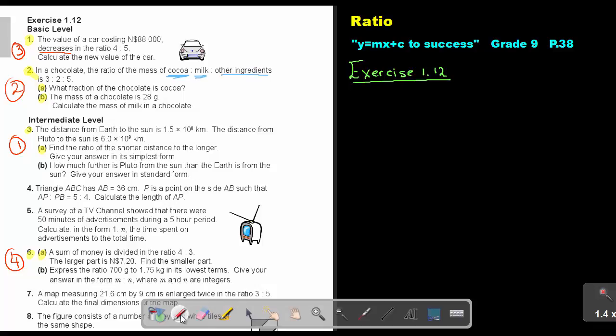Let's look at number 3. Now, the distance from Earth to the Sun is this. The distance from Pluto to the Sun. Find the ratio of the shorter distance to the longer distance. So, the shorter one will be the 1 to the power of 8. That's the longer one to the power of 9. So, we can make it a heading and say shorter distance to longer distance. So, the shorter distance is that 1.5 times 10 to the power of 8. And this one is 6.0 times 10 to the power of 9. Now, I think it's best if we write it in decimal notation so that we can see.